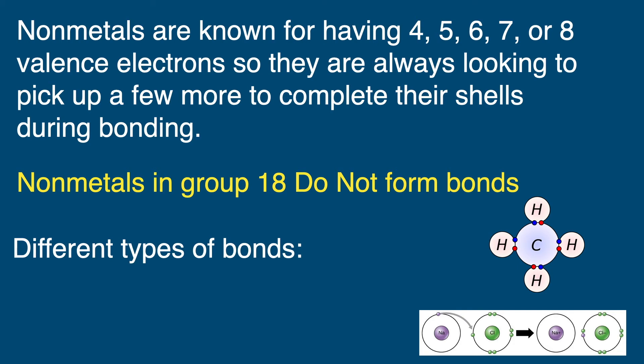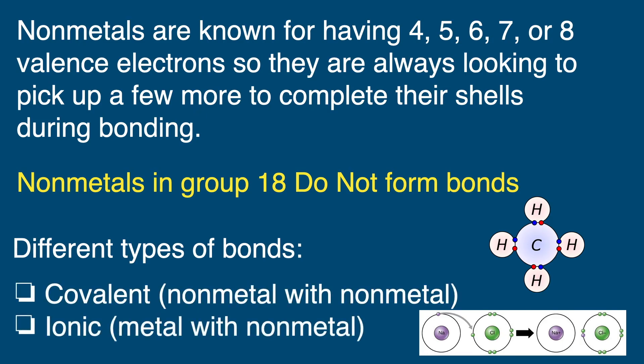The different types of bonds that non-metals can create are covalent, which is non-metal with non-metal, and ionic, metal with non-metal.